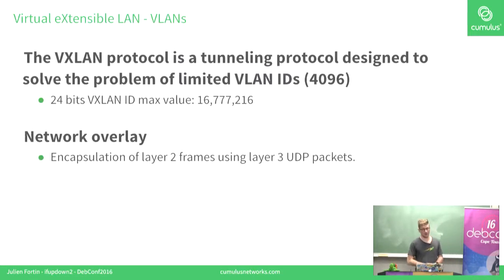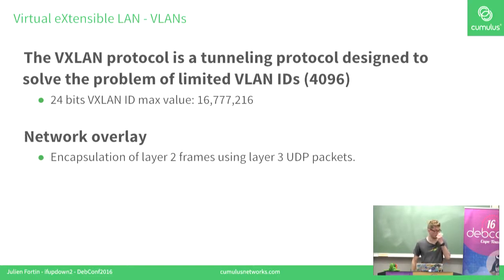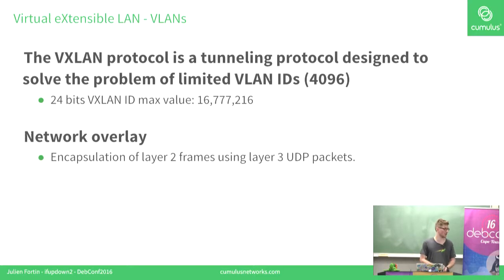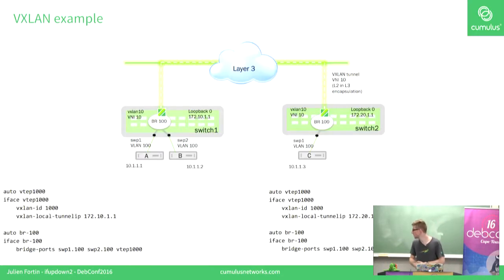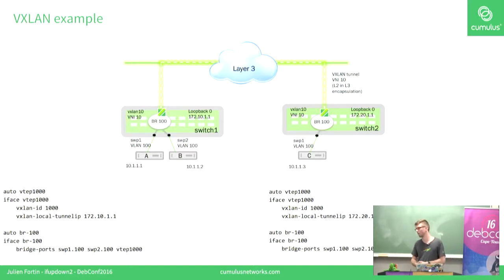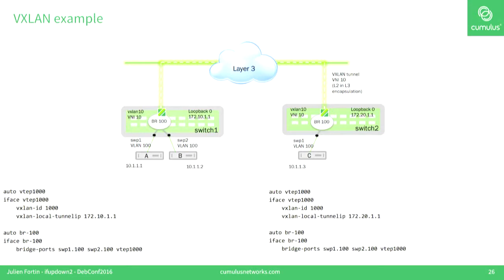VXLAN is a networking overlay that encapsulates layer-2 frames into layer-3 UDP packets — it essentially solves the VLAN limit. You can only have 4,000 VLANs, but now you can have 16 million VXLANs. Here's an example of a small topology with the configuration you would use in IfUpDown2 to configure it — very light and practical.